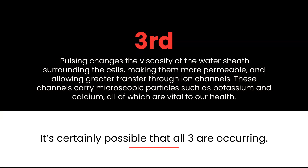Third, pulsing changes the viscosity of the water sheath surrounding the cells and mitochondria, making them more permeable and allowing greater transfer of particles through the ion channels. These channels carry microscopic nutrients such as potassium and calcium. These vital nutrients in turn feed the mitochondria to produce more ATP. It's certainly possible that all three of these theories are occurring at the same time.